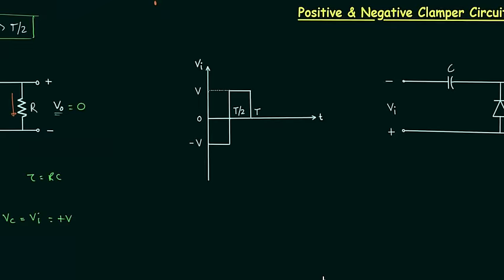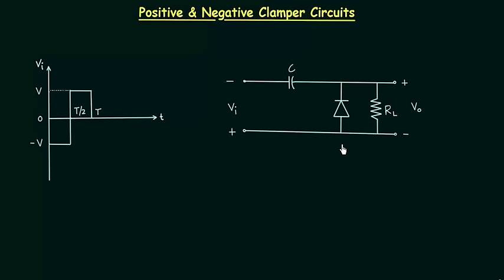We have already completed the negative clamper, and I will explain the positive clamper in this lecture. This is the circuit of positive clamper. We have one capacitor, one diode, and load resistance. We are measuring the output voltage Vo across this load resistance. Vi is the input voltage and this is the input waveform.